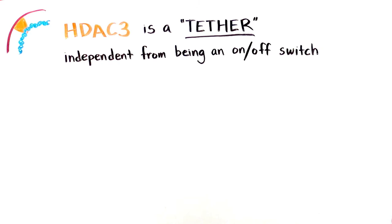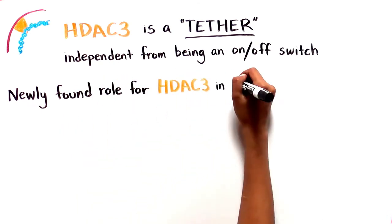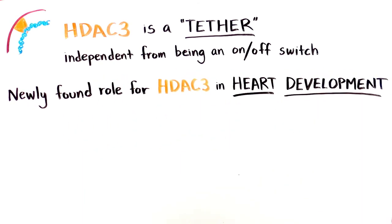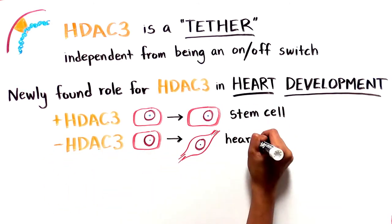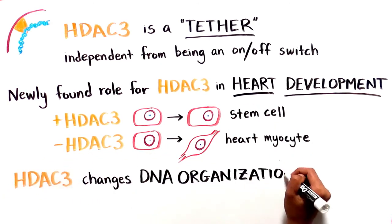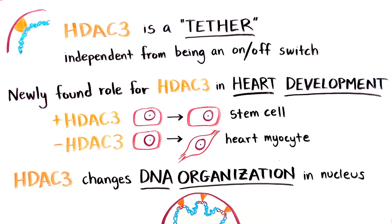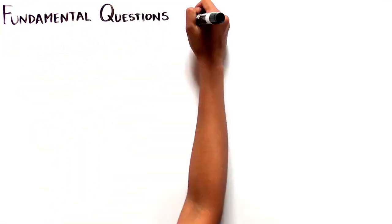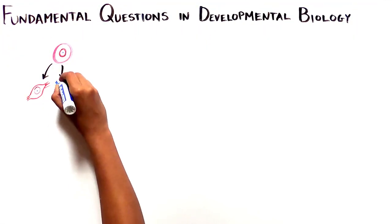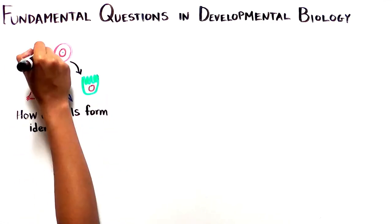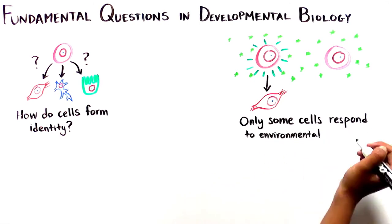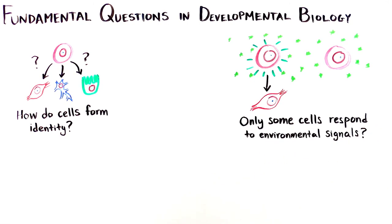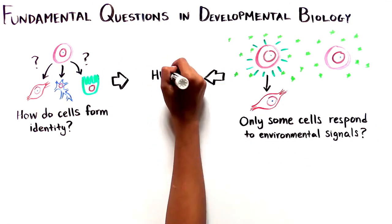This research also defines both a previously unknown function for HDAC3 in heart development as well as a mechanism for how cellular identity is achieved in the heart by changing the three-dimensional organization of the DNA in the nucleus. This work also begins to address fundamental questions in developmental biology: how do cells form their identity, and why can some cells respond to certain environmental signals while others cannot?